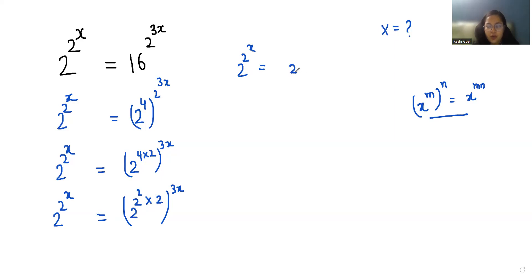it as 2^(2×2^(3x)). So 2^(2^x) equals 2^2. According to the exponent rule x^m × x^n = x^(m+n), we can write it